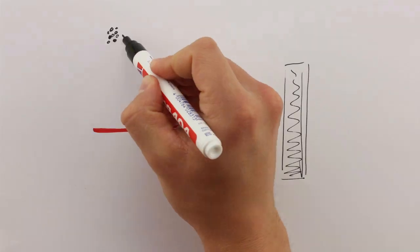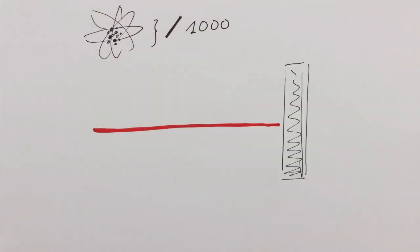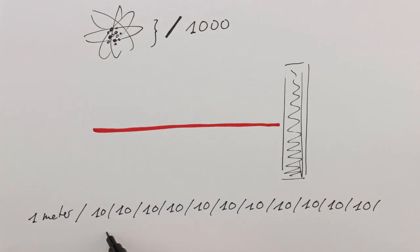Already, our detectors can measure arm length changes as small as a thousandth of a diameter of an atomic nucleus, that is a billionth of a billionth of a meter.